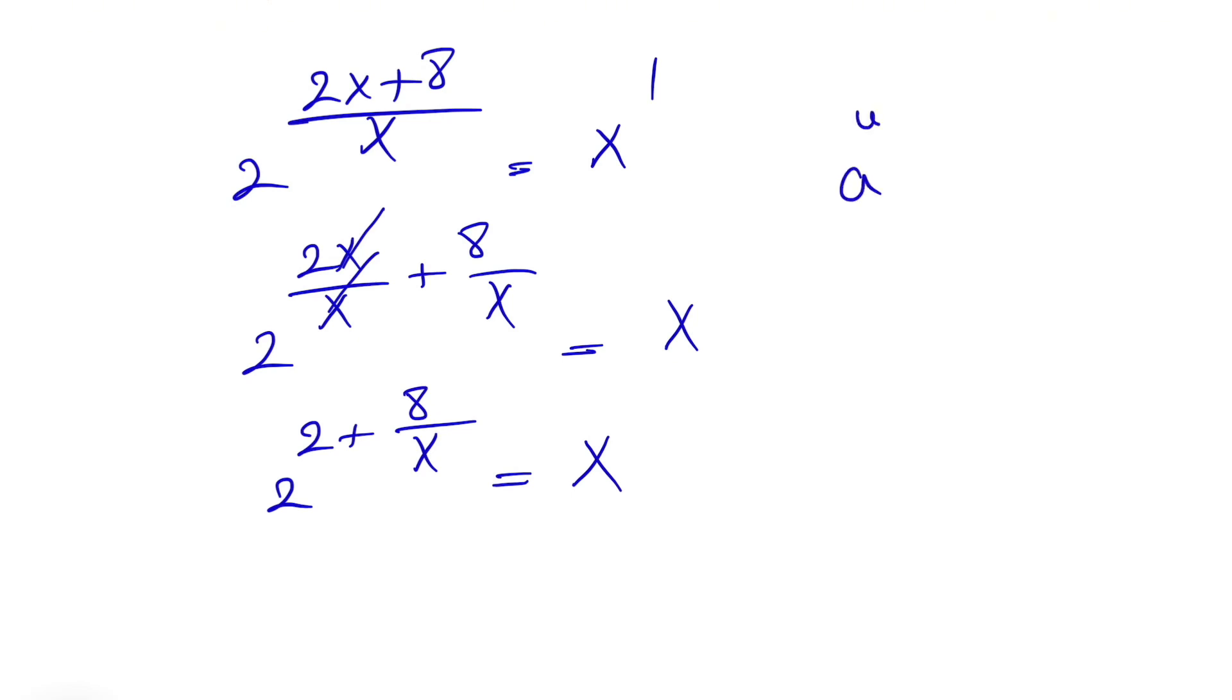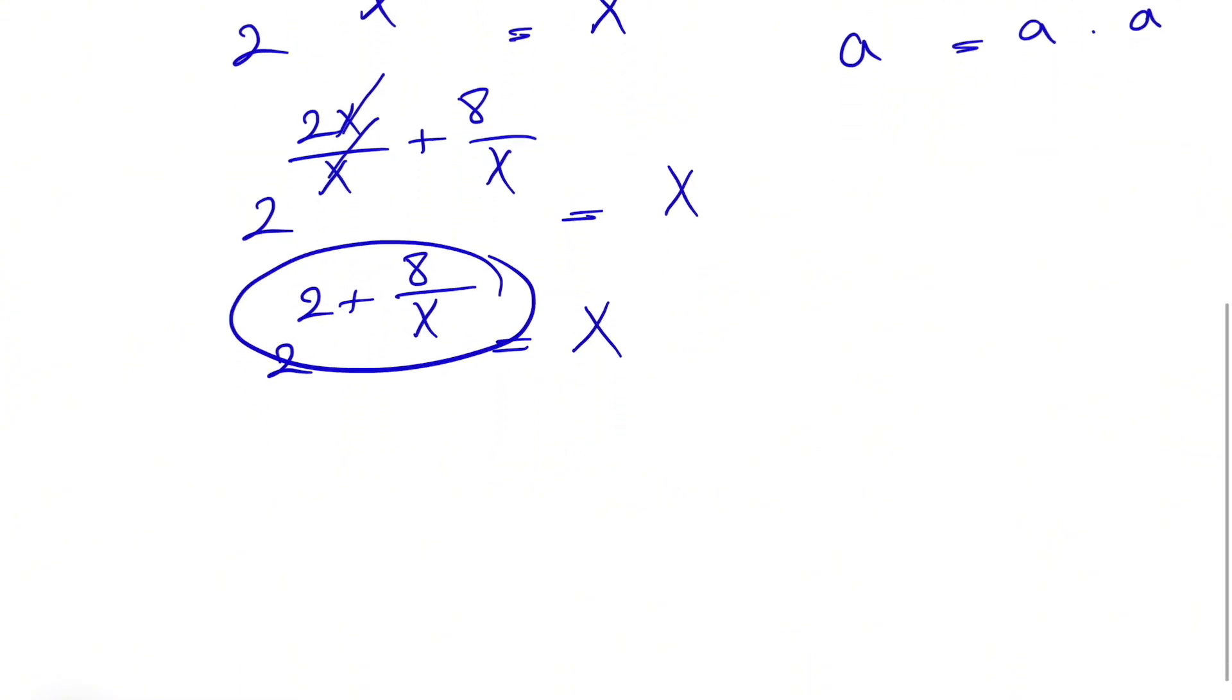We know when we have a to the n times a to the n, this will be n plus n. So we will have 2 to the 2 times 2 to the power of 8 over x equals x.